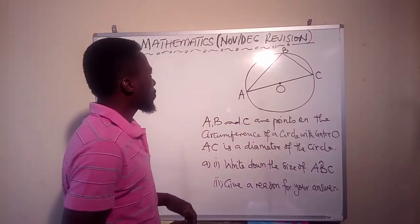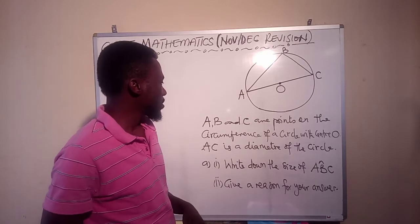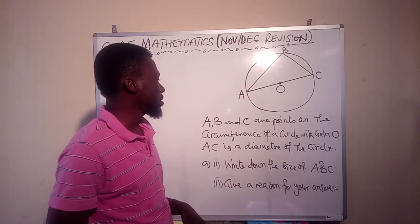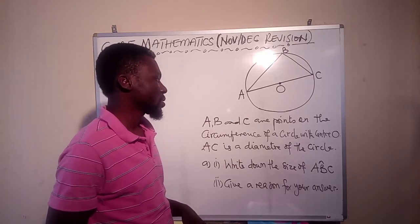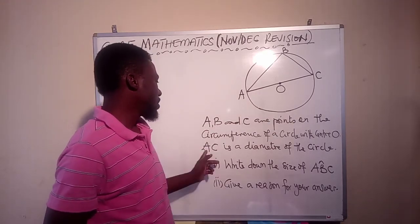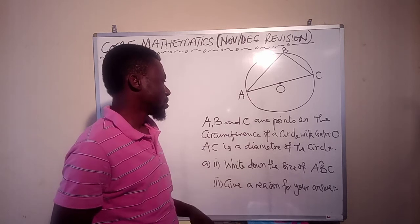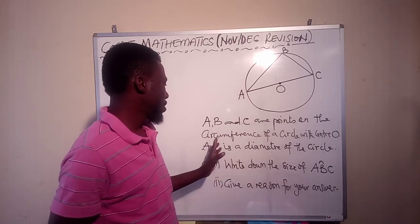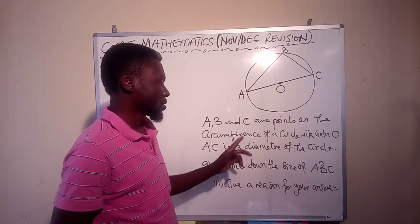All right. So we have a question here. The question says that A, B, and C are points on the circumference of a circle with center O. We are referring to this diagram. So AC is a diameter. So that is very instructional.